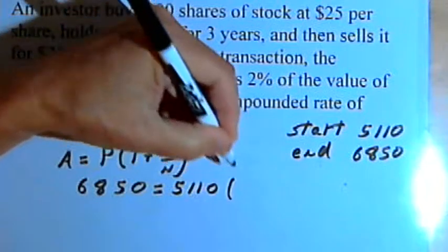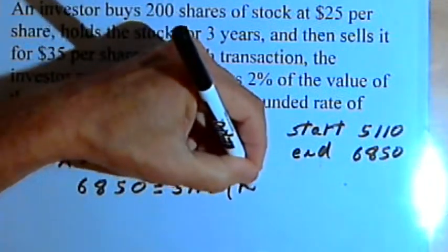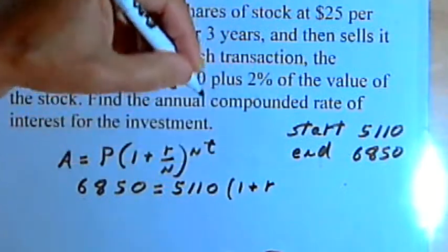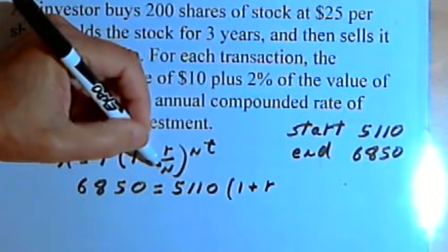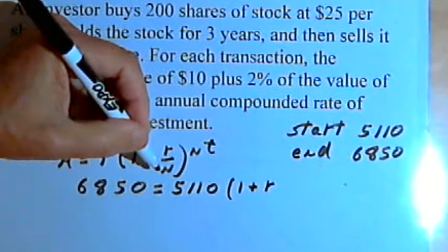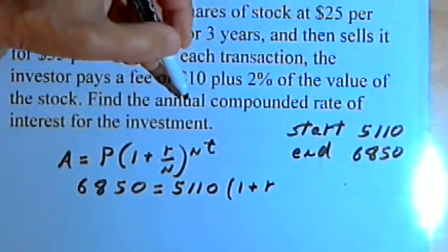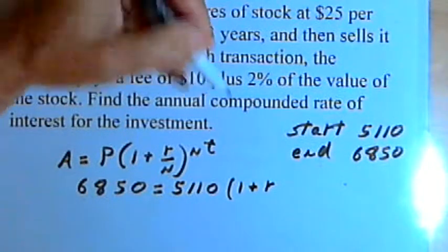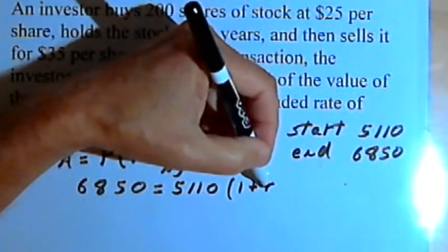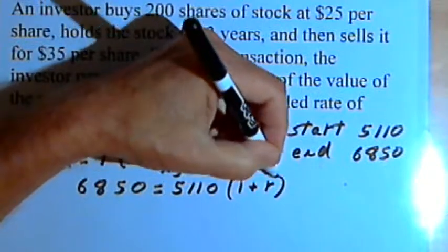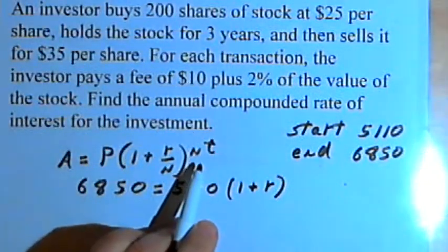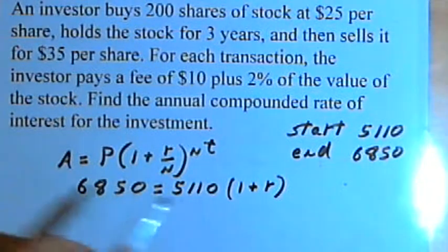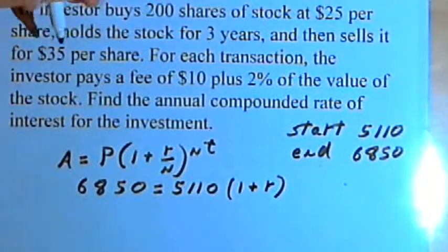We multiply that by 1 plus r, where r is the rate, that's what we're looking for, divided by n. n is the number of compounding periods per year. But the problem says find the annual compounded rate, so there's only one compounding period per year. So that would be r over 1, we'll just leave it as r. Then we want to raise that to the nt power. n is 1, and t is time, which was 3 years.